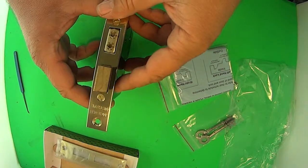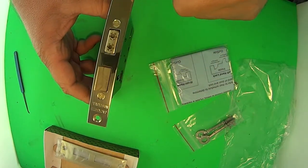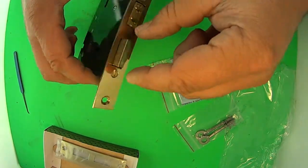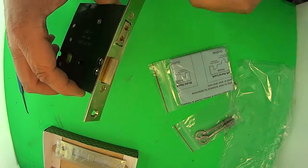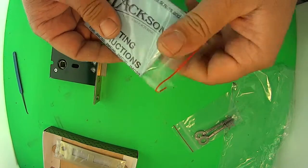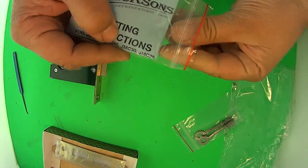Now if you buy this lock and you find that you need to reverse the bolt, this can simply be done by undoing these two screws here and undoing those two screws and flipping the bolt around and putting it back in. I'll quickly just give you a demonstration on that one.